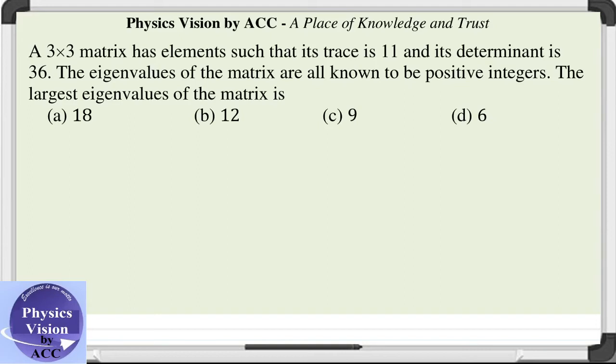Welcome back dear students to the physics vision classes. The given question is: a 3 cross 3 matrix has elements such that trace is 11 and its determinant is 36.